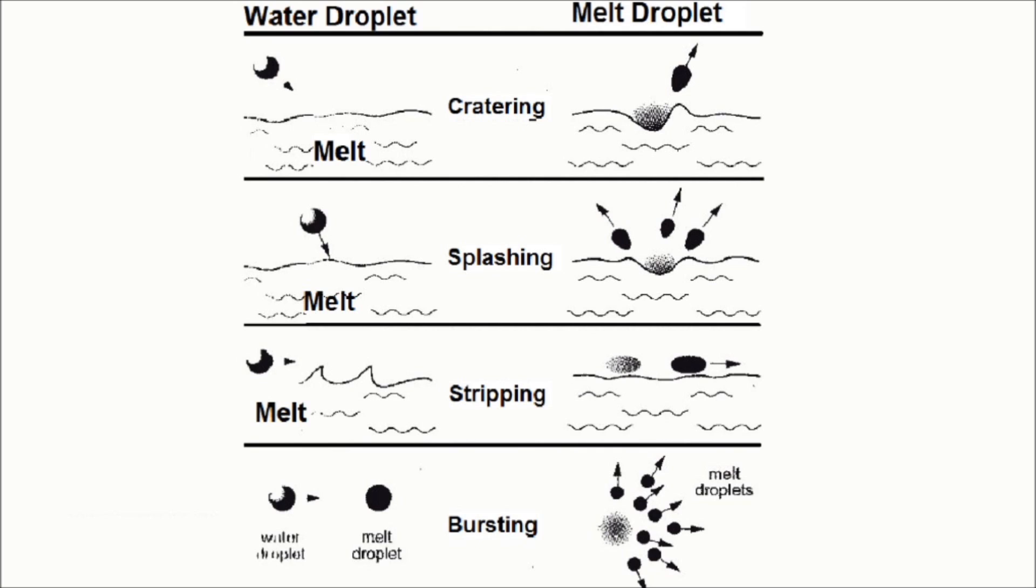Next I'll be explaining what's going on during the disintegration of the melt stream. During this process particles can be generated in one of four ways. These mechanisms include cratering, splashing, stripping, and bursting.